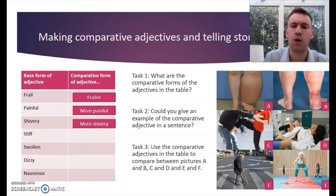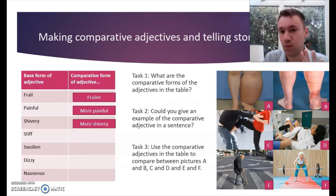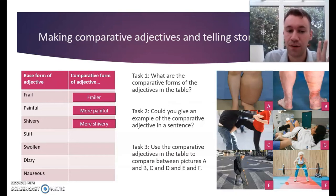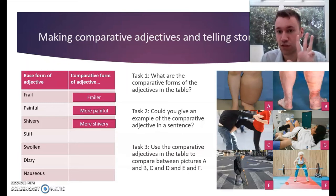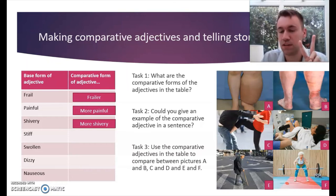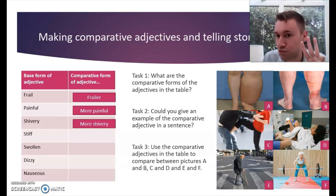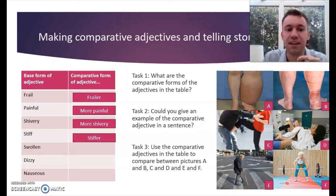'Shivery' — it ends in Y, yes, just like 'happy' and 'angry.' However, 'shivery' is three syllables. Only two-syllable words ending in Y form a comparative with IER — 'happy,' 'angry.' 'Shivery' has three syllables, so: 'more shivery.' 'Stiff' — one syllable — 'stiffer.'